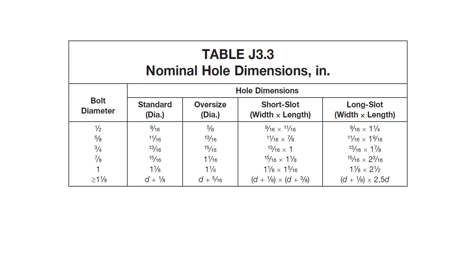Looking at Table J 3.3 from the 2022 edition of the AISC specification, we can see that standard holes for bolt sizes up to and including seven-eighths are one-sixteenth of an inch larger than the diameter of the bolt.